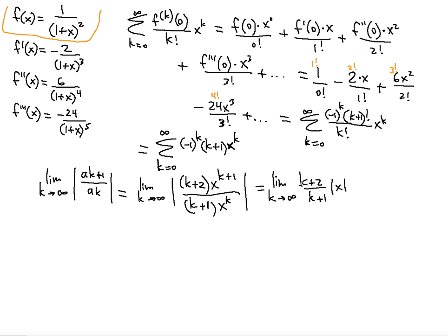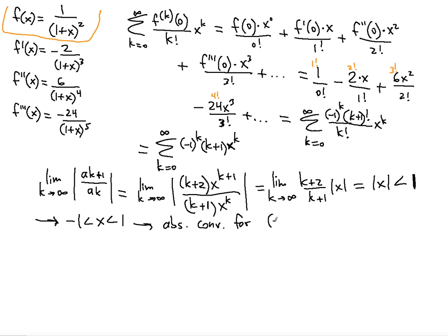Taking the limit, dividing numerator and denominator by k, we get 1 plus 2 over k divided by 1 plus 1 over k. As k goes to infinity, that gives 1 over 1, which is 1. So the limit equals the absolute value of x. According to the ratio test, this should be less than 1 for absolute convergence. That tells us negative 1 is less than x is less than 1, so we have absolute convergence on the interval negative 1 to 1.